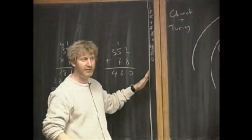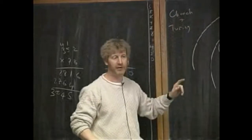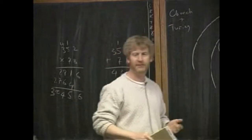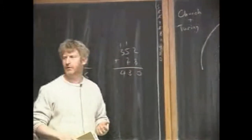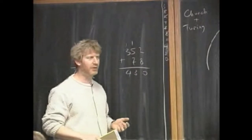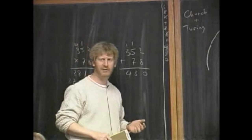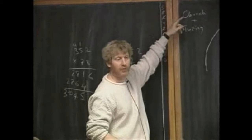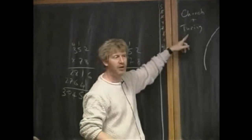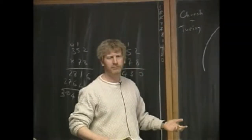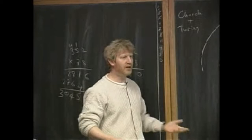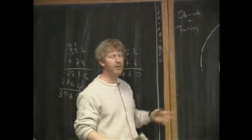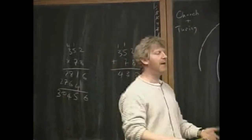Turing came up with what we call a Turing machine, which is a little bit like this funny method of computation I just described. And Church came up with lambda calculus, which is very closely related to the language Scheme that you spent a month programming in. You can describe any computation with a lambda calculus. You can describe any computation with a Turing machine. Well, it's kind of no way to prove that, because what is computation? What these things really are are definitions of computation.